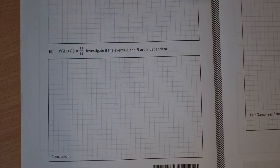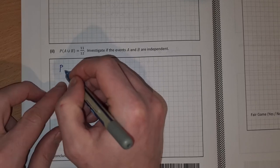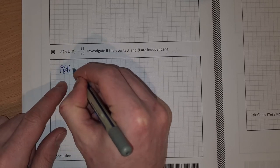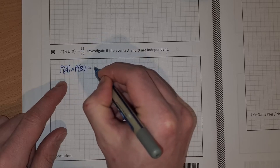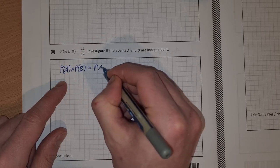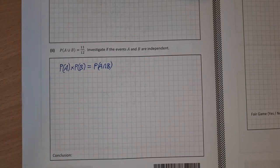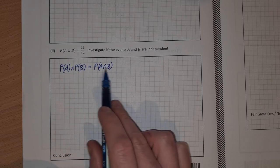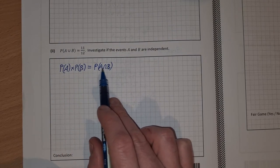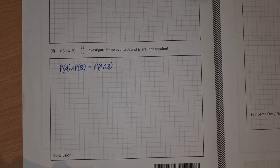So to do this the test for independence is the probability of A times the probability of B is equal to the probability of A intersection B. If this is true then the two events are independent. Now to fill in we already have a probability of A intersection B. We already have a probability of A. We just need to find the probability of B.